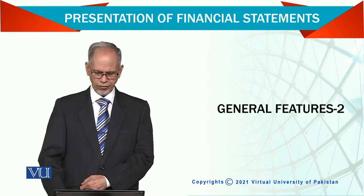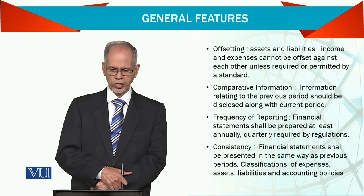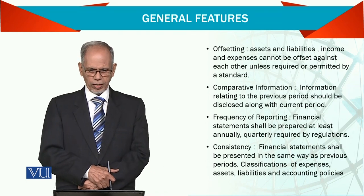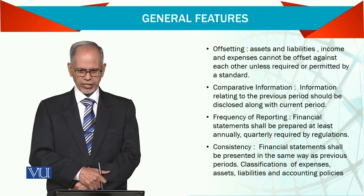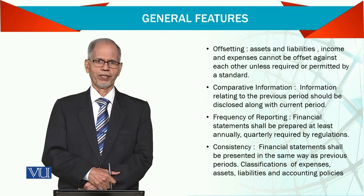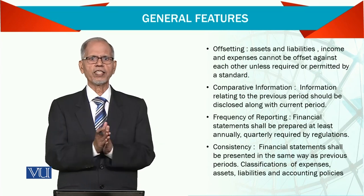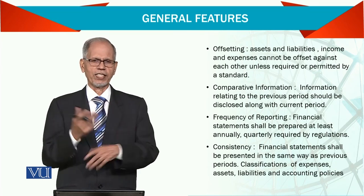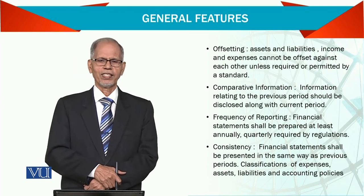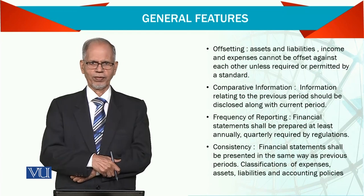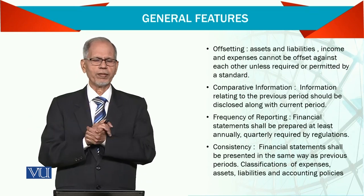We are talking about general features of producing general purpose financial statements. One feature is offsetting assets and liabilities — income and expenses cannot be offset. You cannot simply say it is an asset and a liability and just ignore it or offset it. For example, you cannot offset a receivable and a payable, because receivables are assets and payables are liabilities — you cannot just offset them.